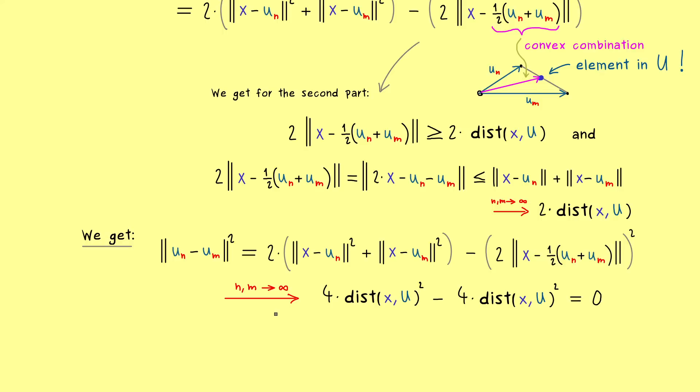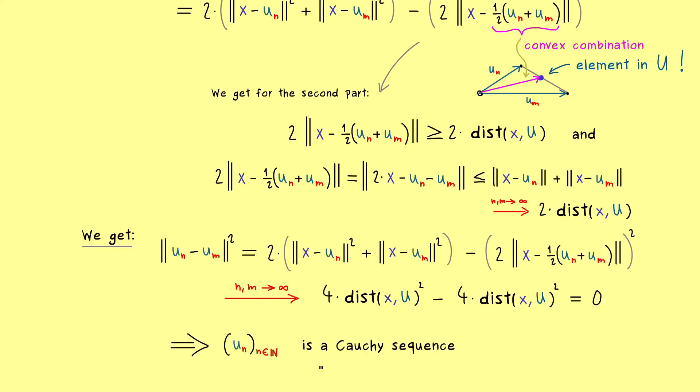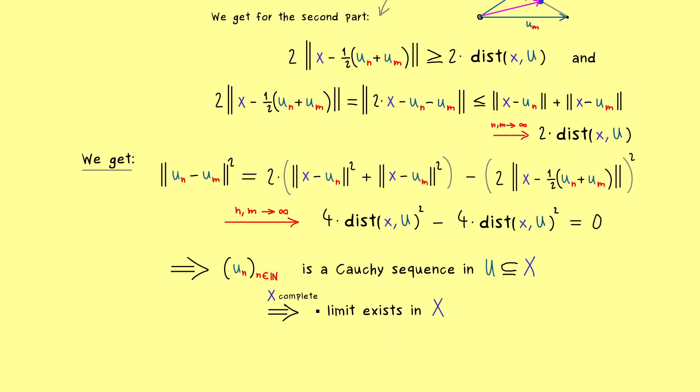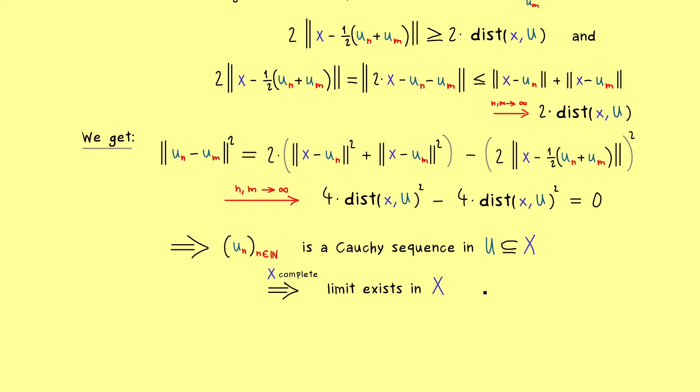And now please note, since the limit here is 0 for n and m to infinity, it implies that our sequence u_n is a Cauchy sequence. And moreover we have 2 informations about u_n as well. First, every element lies in U. And second, everything happens in our complete Hilbert space X. So the conclusion is, it's a convergent sequence as well. So you could say that the limit is a well defined element in the Hilbert space X.